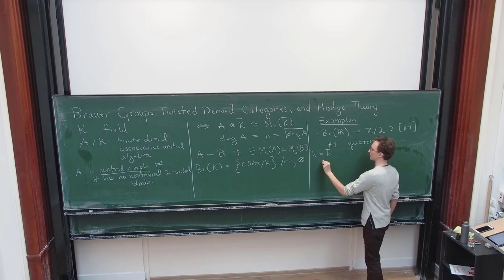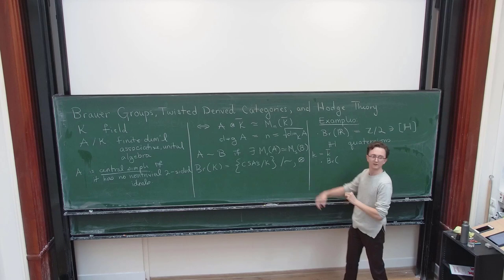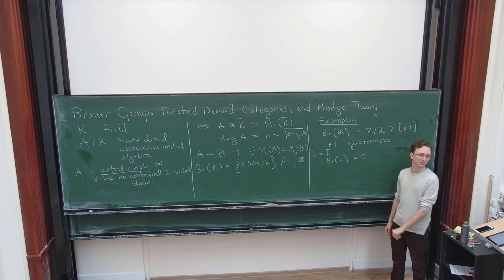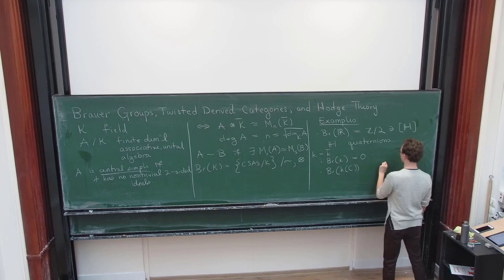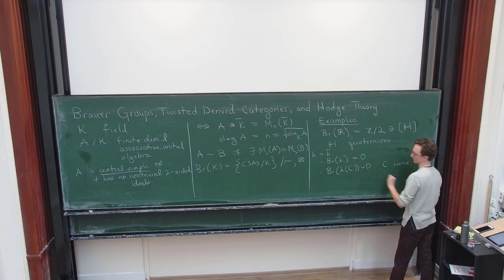So let me start telling you what those look like. And let's suppose that I take some algebraically closed base field. So first of all, if you stare at this, the Brouwer group of my algebraically closed field is necessarily trivial. And if I take the function field of a curve, so here C is going to be a curve over an algebraically closed field.